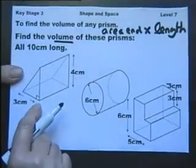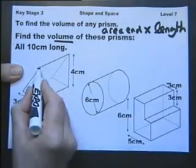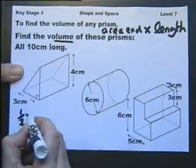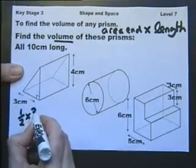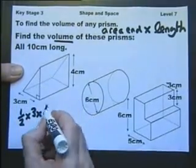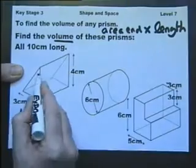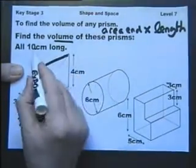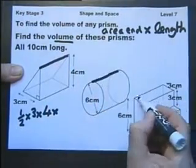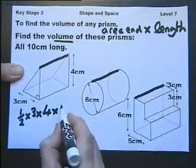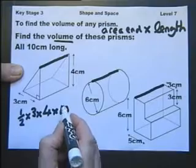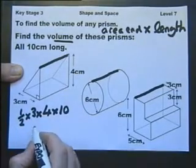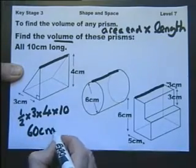So if we want to find the volume of this prism, first off we need to find the area of this triangle. Because it's a right angle triangle, the area of the triangle is half the base which is 3 multiplied by the height which is 4, so that will give me the area of the end, and then I'll multiply that by how long the prism is, and all these prisms are 10 centimetres long. So therefore this will work out the volume of this prism. 3 times 4 is 12, half of 12 is 6, 6 times 10 is 60, and the answer is going to be cubic centimetres.